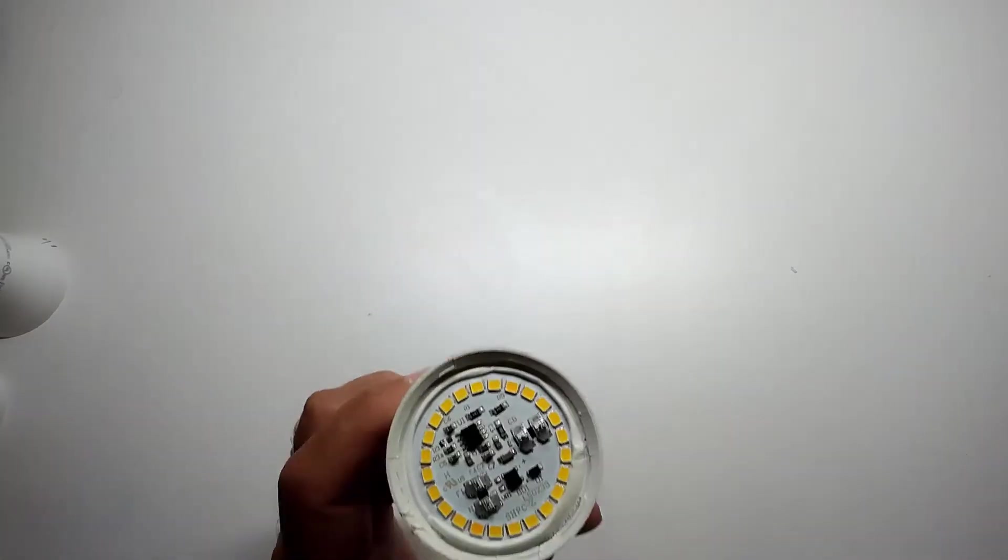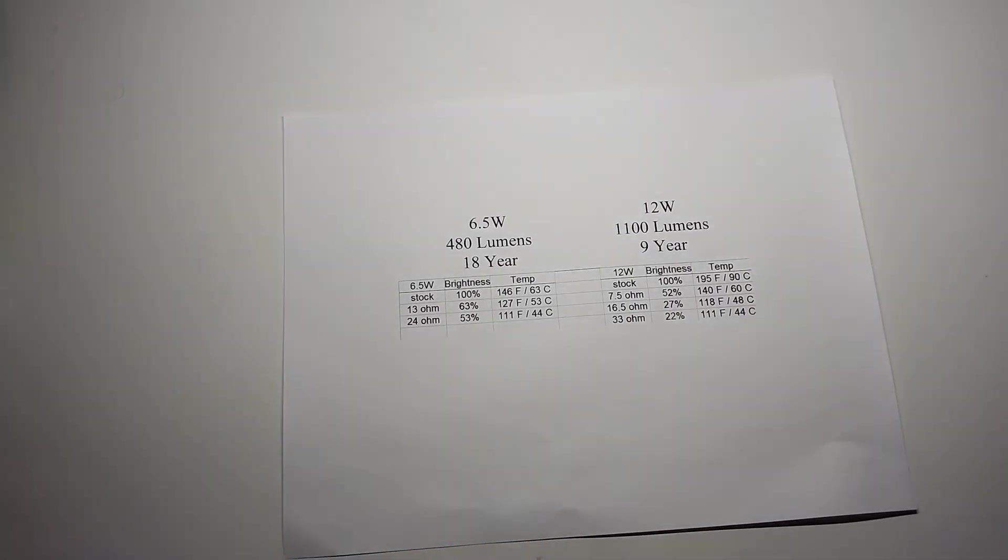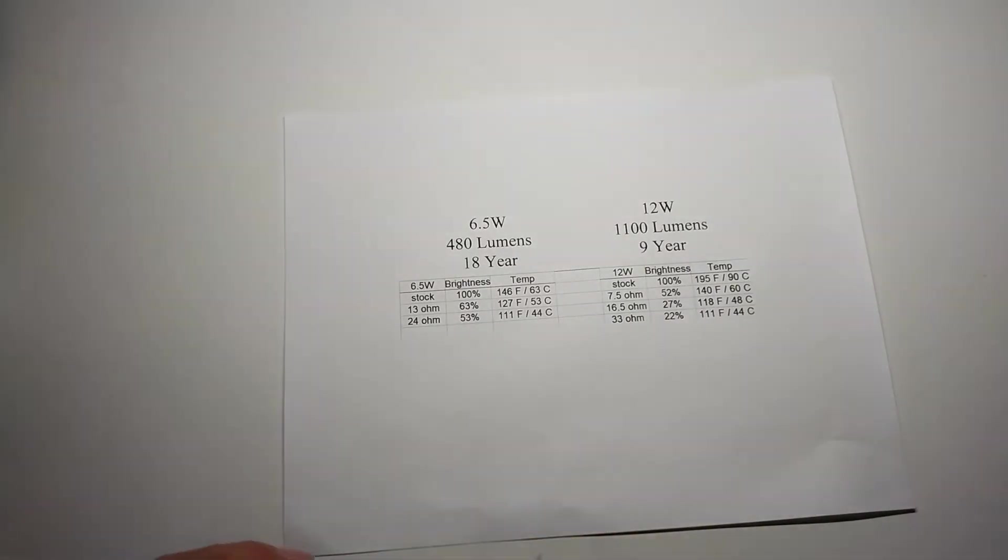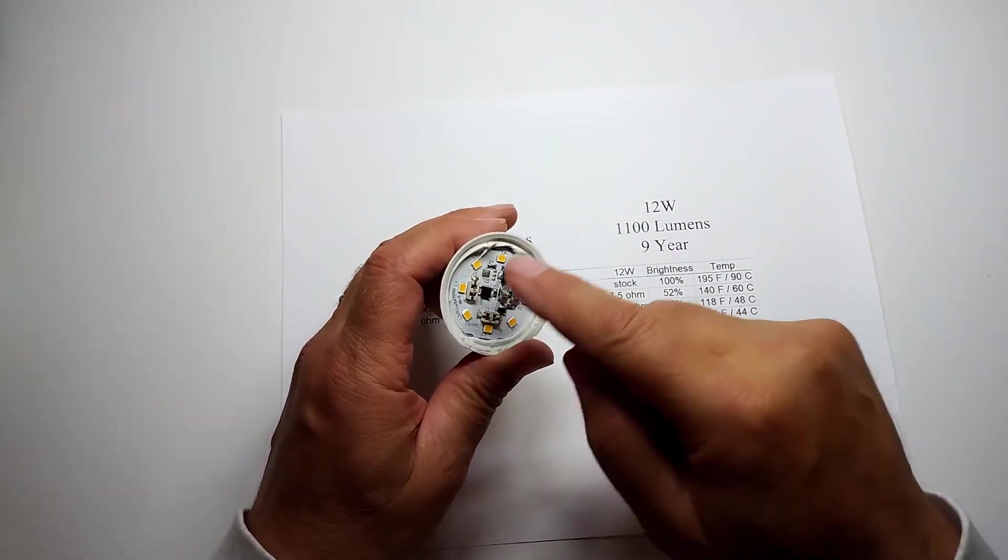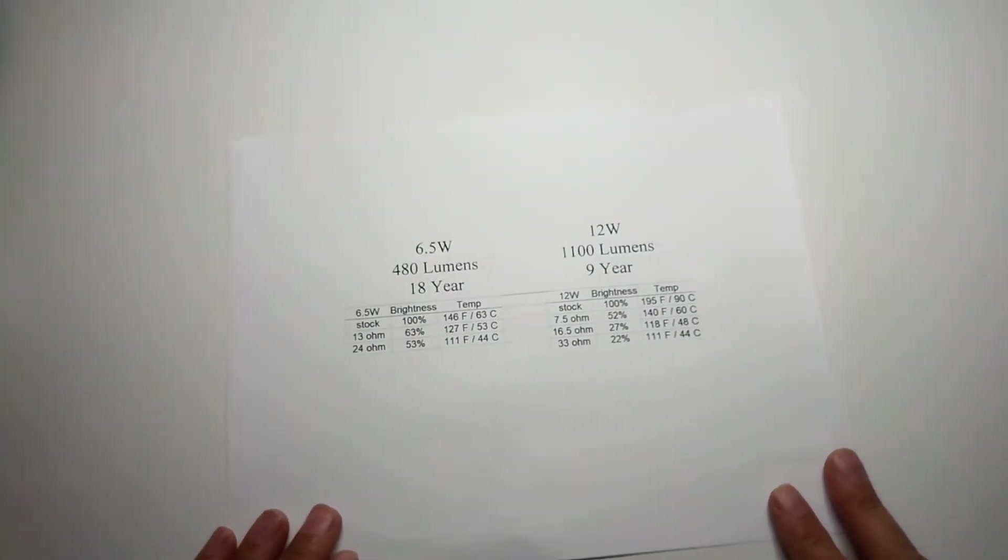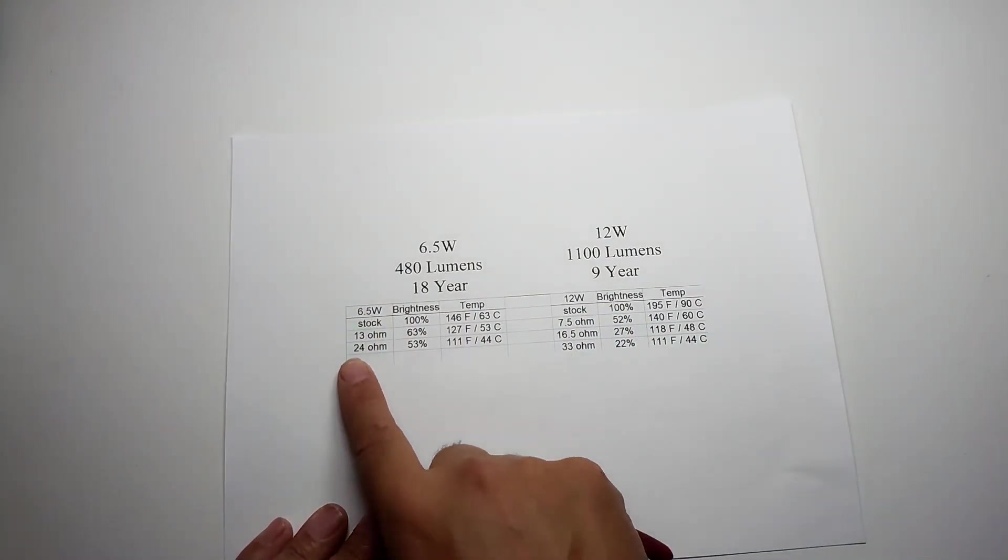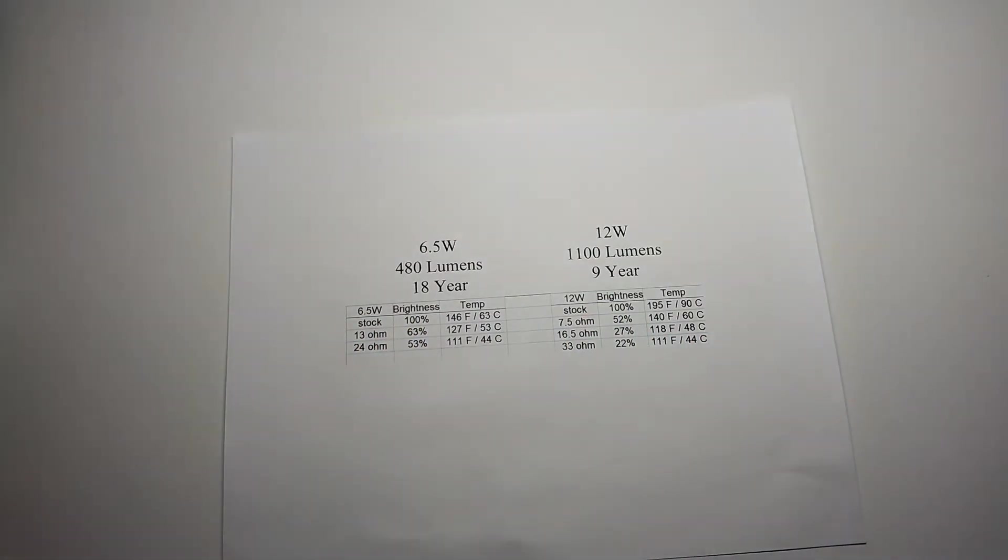Since I had a soldering iron that was hot enough that I could actually pull the LEDs off the board—it takes a lot of heat because of the aluminum board—I was able to try a lot of different values for the resistor values and I also measured the brightness difference.